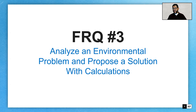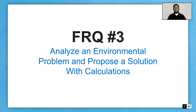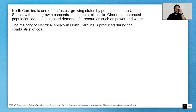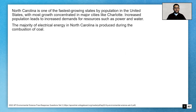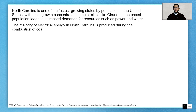I do recommend that you download the PDF from the link at the beginning of the video so you can work through these problems and follow along as we go. So if you take a look here, we're talking about North Carolina being a fast-growing state, and we're looking at the majority of electrical energy produced from the combustion of coal. So you know this is going to probably have some population and some energy questions.